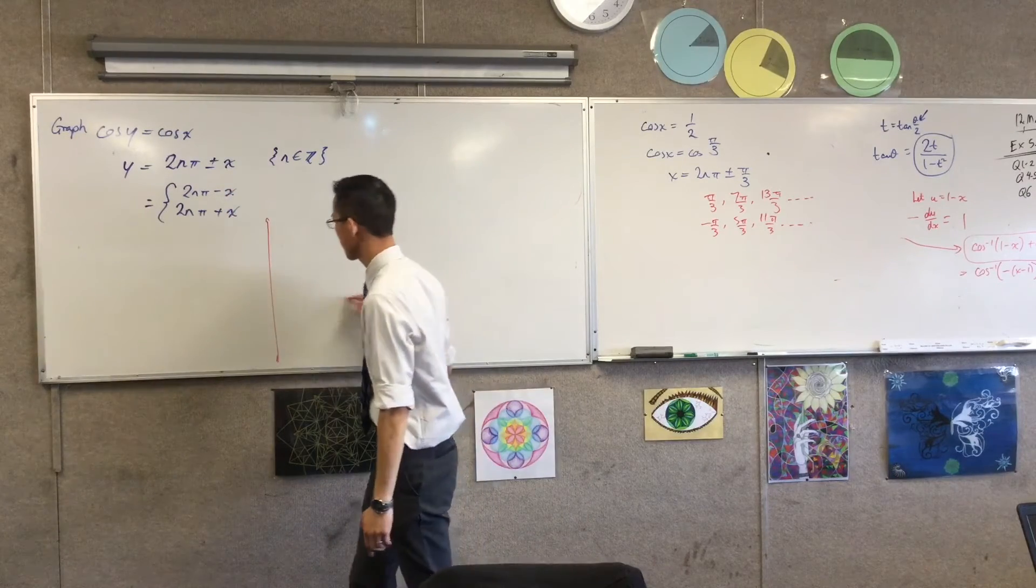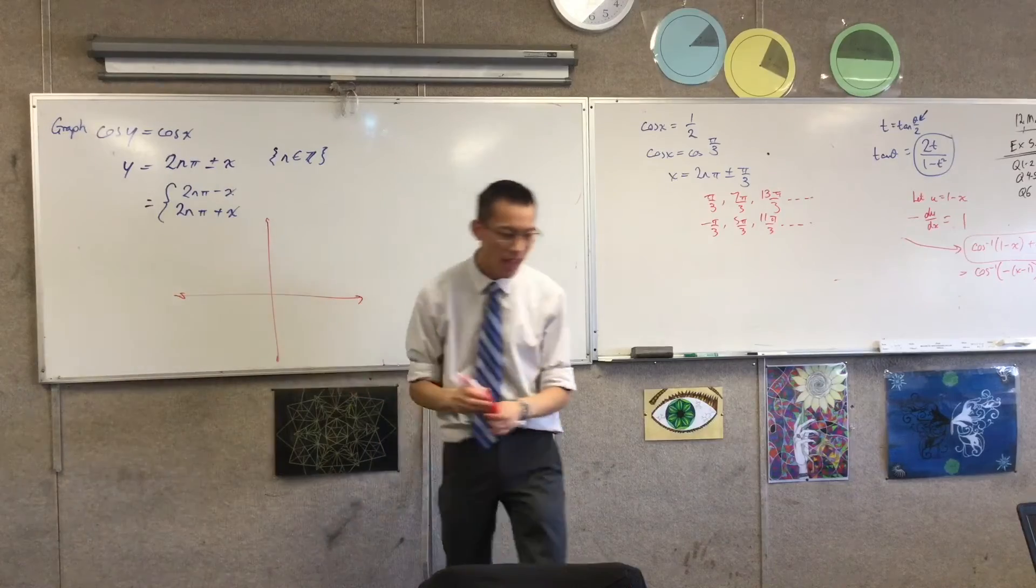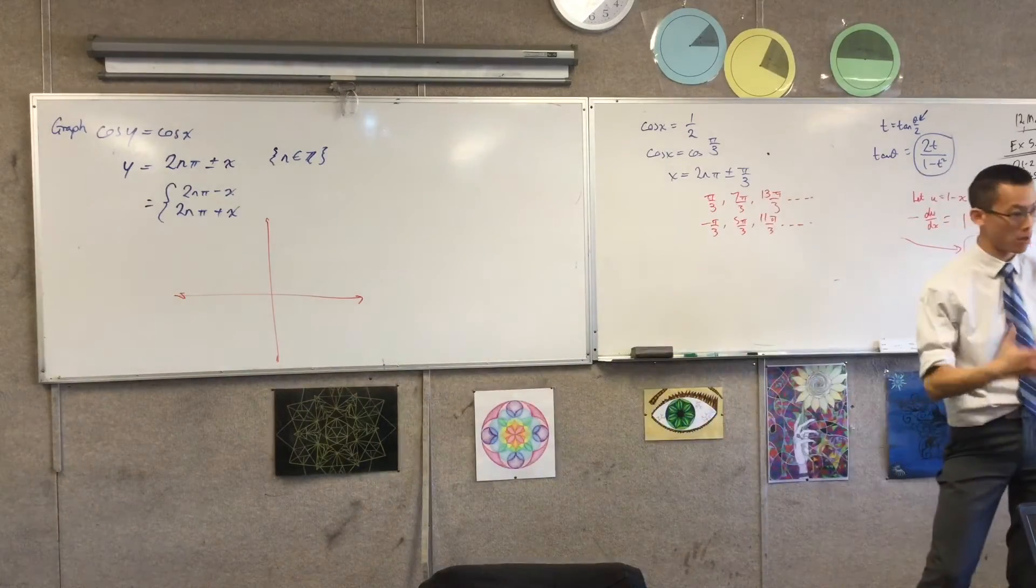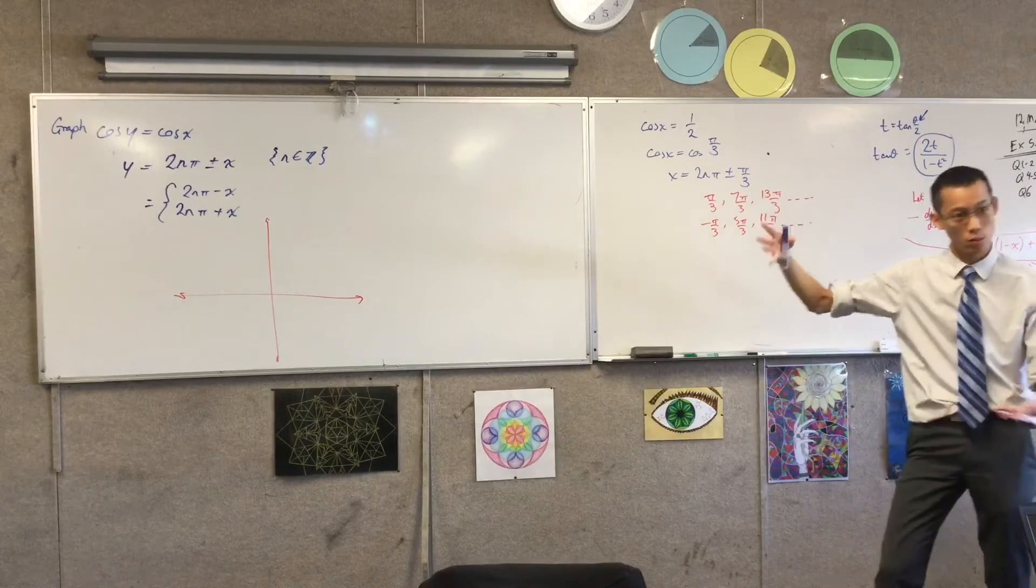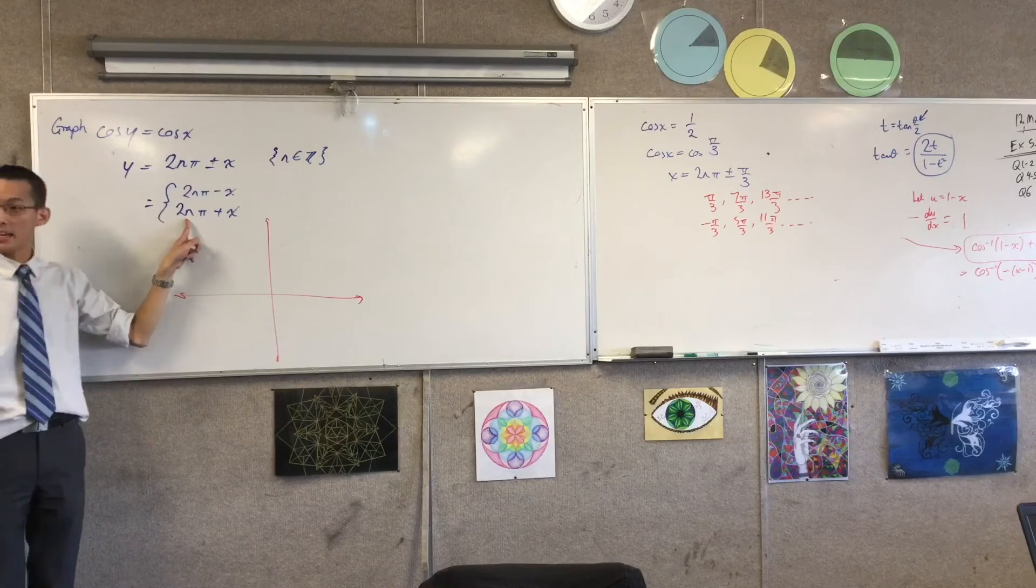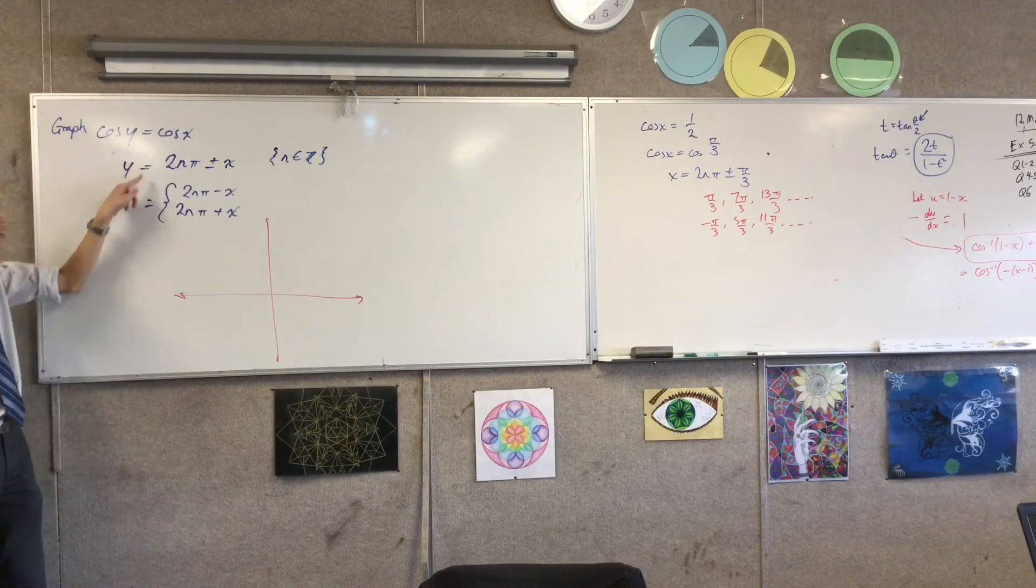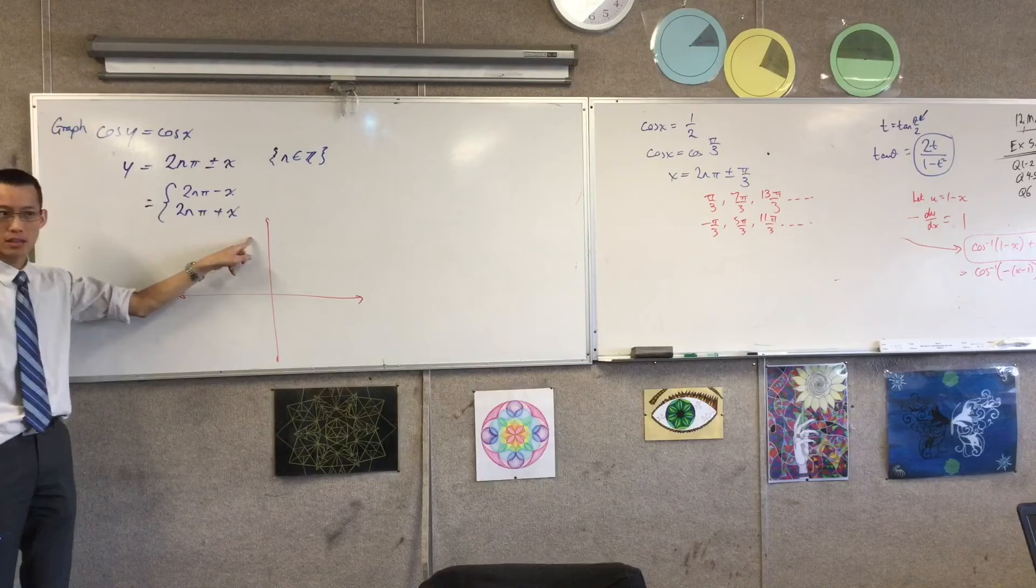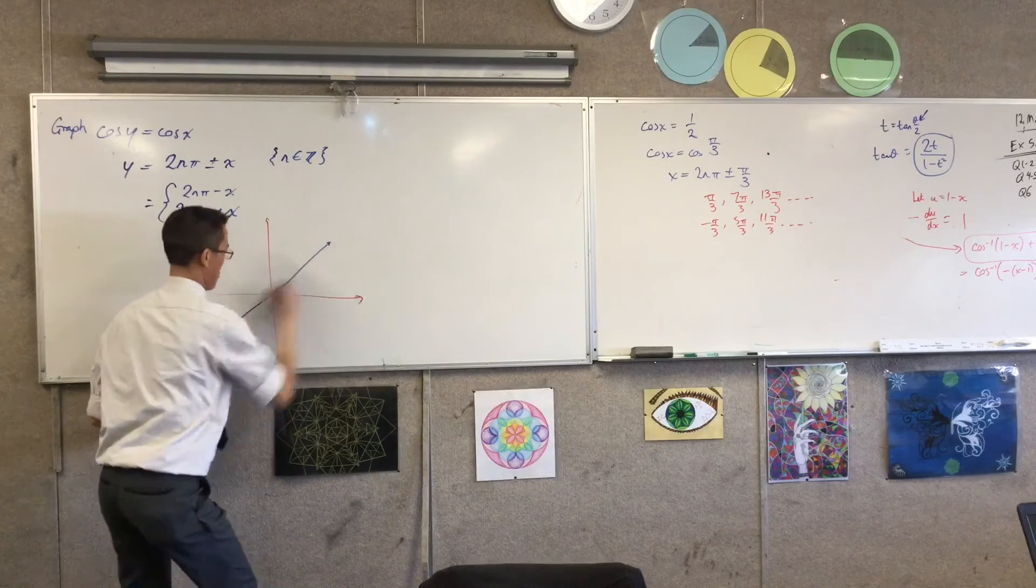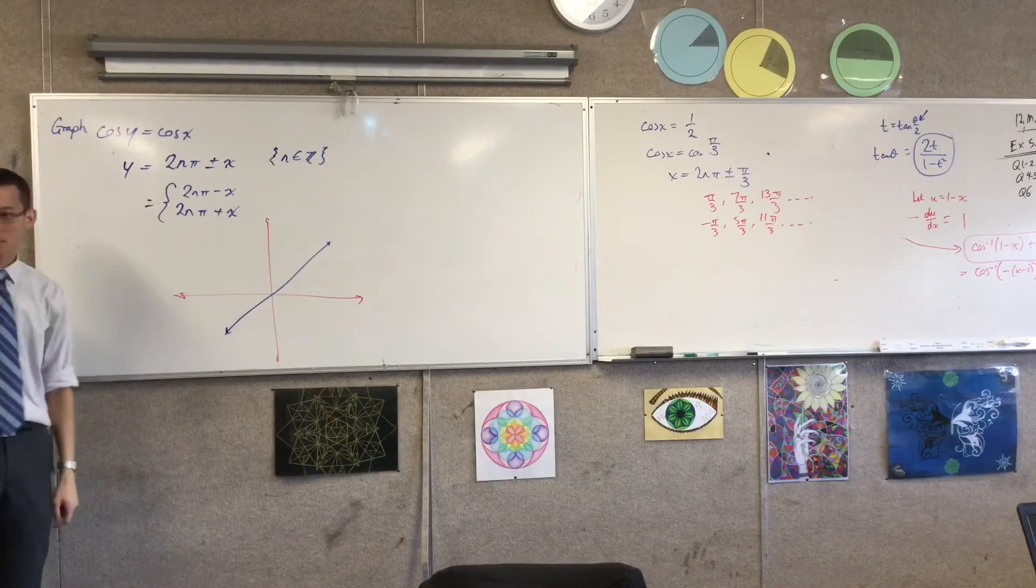Well, just like I did over here, let's list out these solutions, okay? We'll do the positive case first, just like I did here, then we'll do the negative one. If I'm looking at the positive case, which is this guy, let's think about n equals zero first. y equals zero π plus x. y equals x. There we go. Case number one.